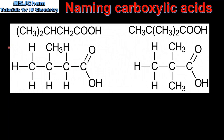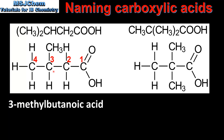We'll end the video by looking at naming two examples of branched carboxylic acids. When naming branched carboxylic acids, we give a number to the carbon atom that's bonded to the branch or branches. When numbering the carbon atoms, the carbon atom of the carboxyl group is assigned carbon number one. So in this example we have a methyl group on carbon number three. There are four carbon atoms in the longest chain, therefore it is named 3-methylbutanoic acid.